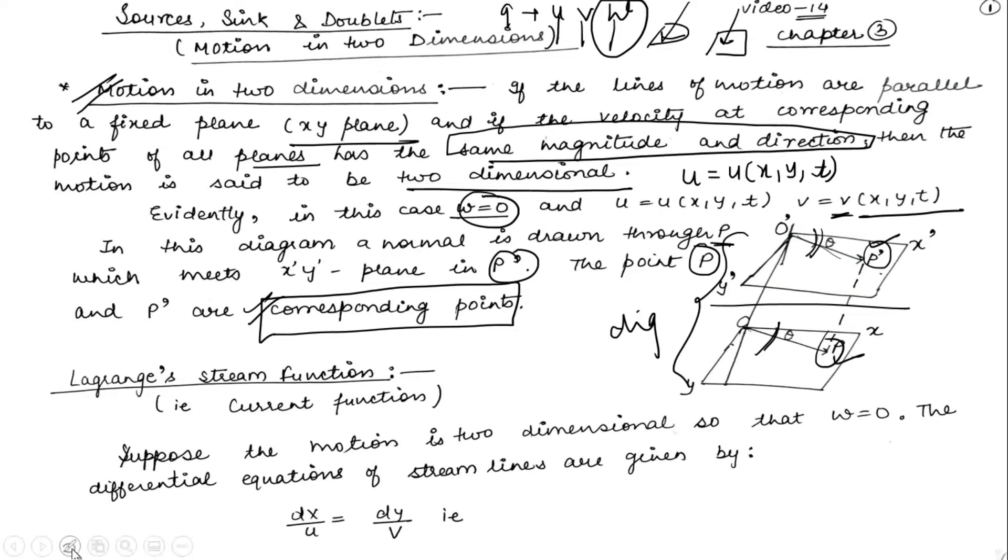The point p and p dash we call corresponding points. Now we understand the Lagrangian stream function. Suppose the motion is two-dimensional, so the stream function is constant for streamlines. This is what we get in short 2 or 3 mark questions.